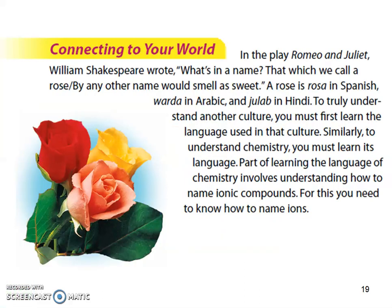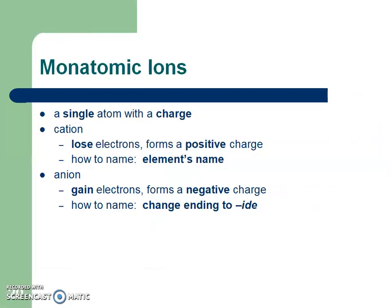In the play Romeo and Juliet, William Shakespeare wrote, 'What's in a name? That which we call a rose by any other name would smell so sweet.' A rose is rosa in Spanish, warra in Arabic, and hulab in Hindi. To truly understand another culture, you must first learn the language used in that culture. Similar to understanding chemistry — you must learn its language. I've been talking about that since day one. Part of learning the language of chemistry involves understanding how to name ionic compounds. For this, you will need to know how to name the ions first. So pause the video, read as you write, fill in those blanks, and then play to hear my words.